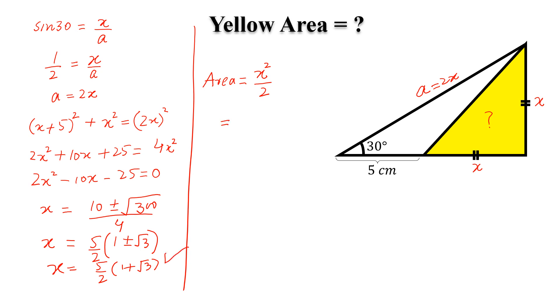So this is equal to (25/4)(1 + √3)² times 1/2.